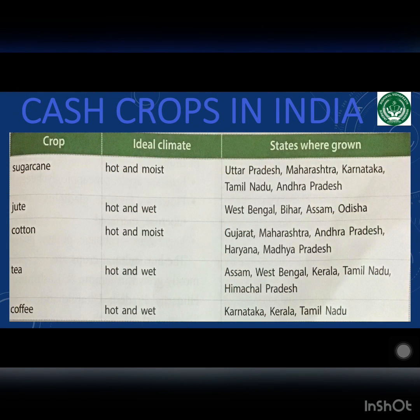These crops are grown in Uttar Pradesh, Maharashtra, Karnataka, Tamil Nadu, Andhra Pradesh, West Bengal, Bihar, Assam, Odisha, Gujarat, Madhya Pradesh, Haryana, Kerala and Himachal Pradesh.